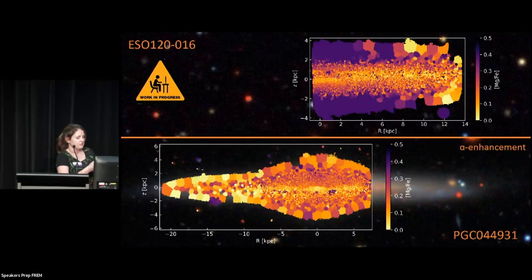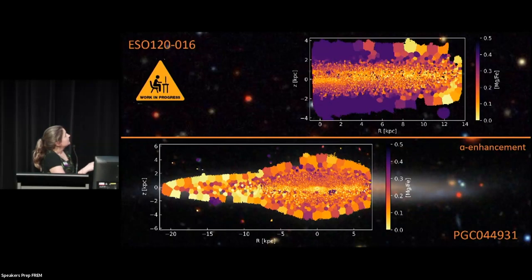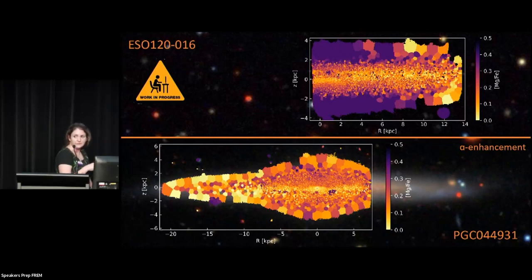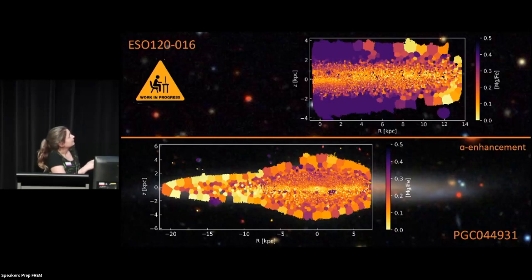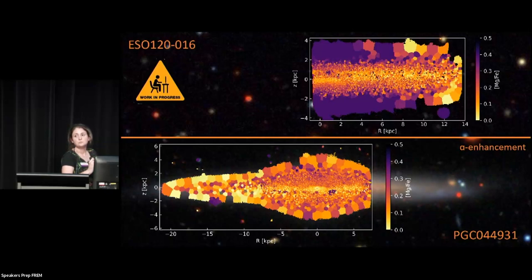Finally, and possibly the most contentious map is our alpha enhancement map — so Mg over Fe. The thin disk here seems to be alpha poor, and then you have an alpha-enriched thick disk, like the Milky Way has. And if you really want to squint, you might just be able to convince yourself there's a bit of flaring of this thin disk in the outskirts — and I'm told by the galactic crowd that's exactly what we see in the Milky Way. So if true, good stuff, lots of implications.